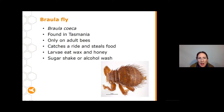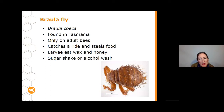The final pest we're covering tonight is Braula fly. Braula fly is found in one region of Australia — Tasmania — but hasn't yet been found on the mainland, and we really want to keep an eye out for it and try to keep it out of the mainland if we can.